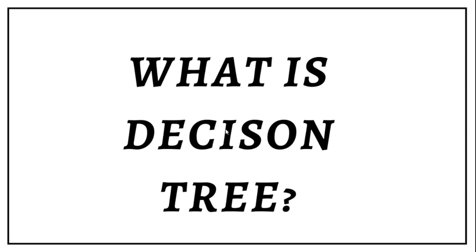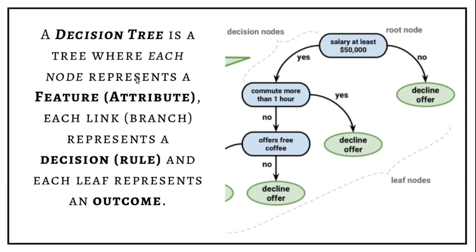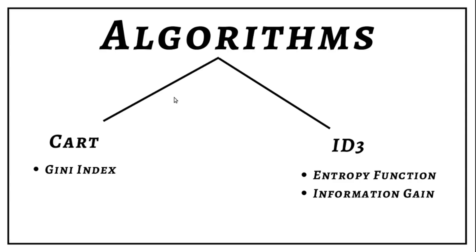But what is a decision tree? A decision tree is a tree where each node represents a feature or an attribute, each link represents a decision rule, and each leaf node represents an outcome. A decision tree is a supervised learning algorithm. Now, we have a couple of algorithms to form a decision tree, but here we will focus on the ID3 algorithm that uses entropy function and information gain.